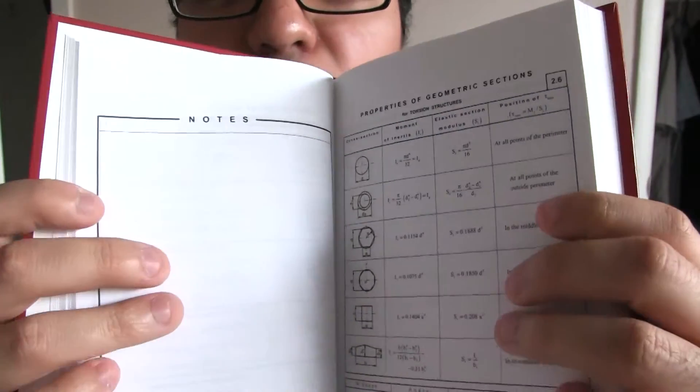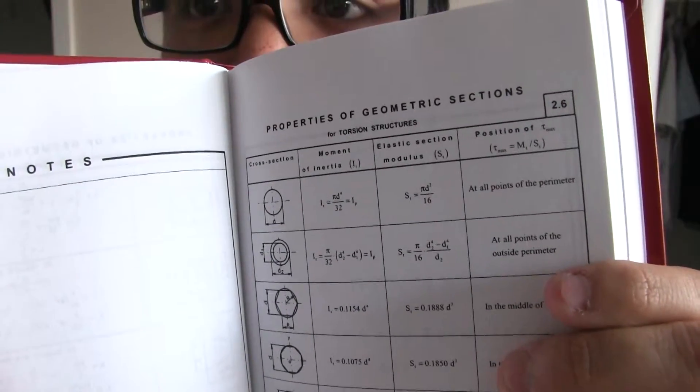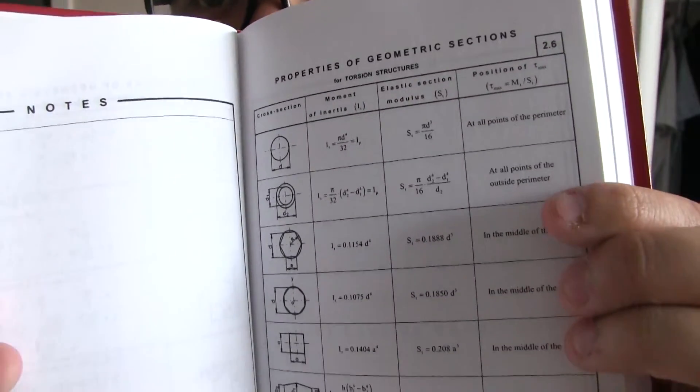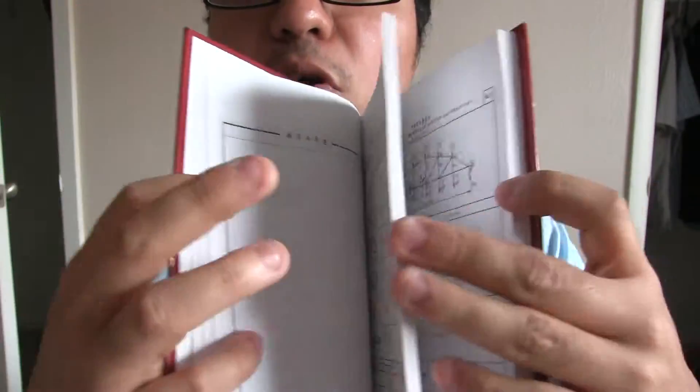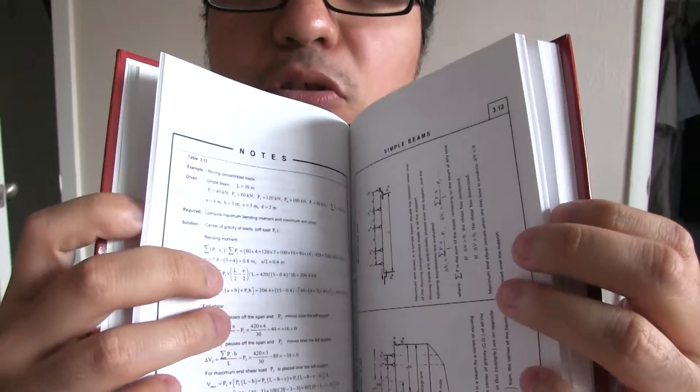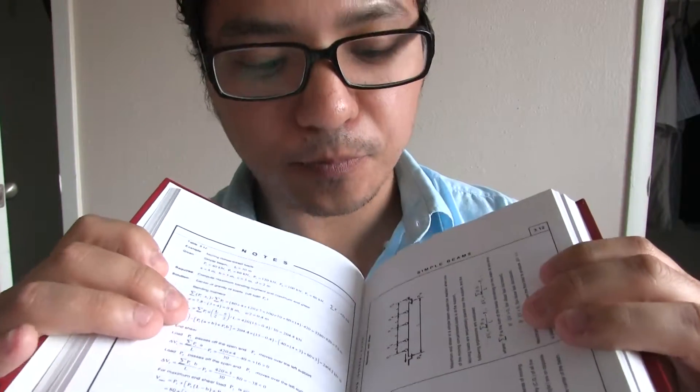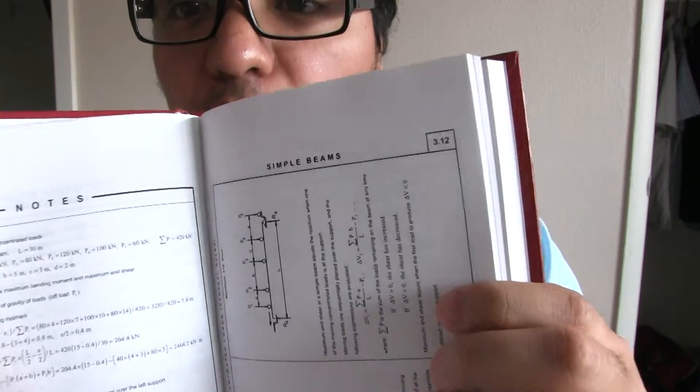And one thing that I really like, it's just straight to the point. Torsional structures and stuff like that, it tells you everything you need to know. Well, not everything you need to know, but it tells you the most important things that you need to know.